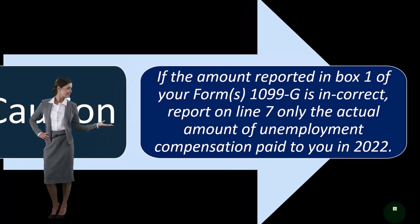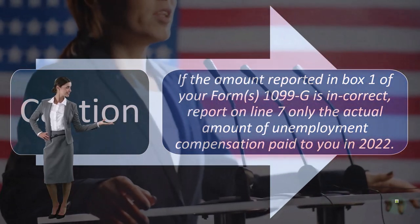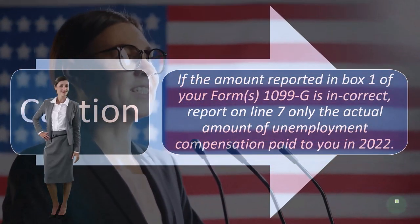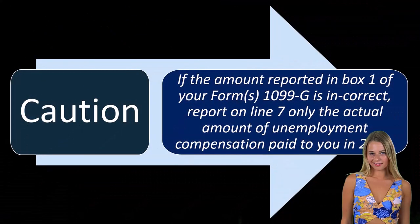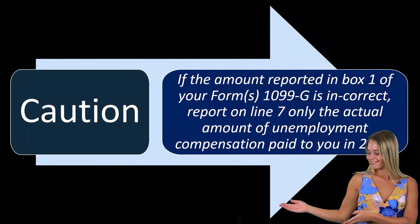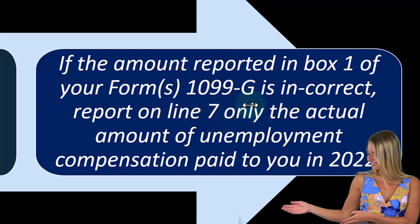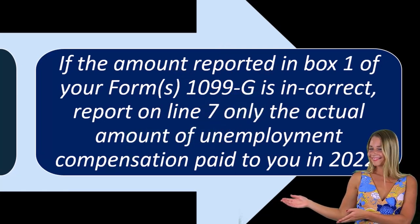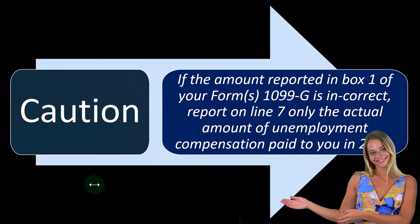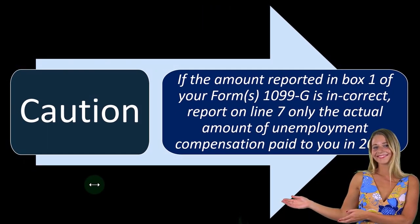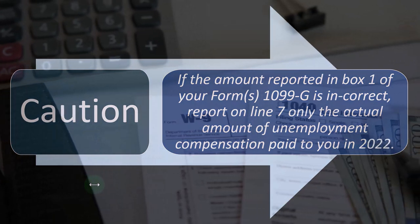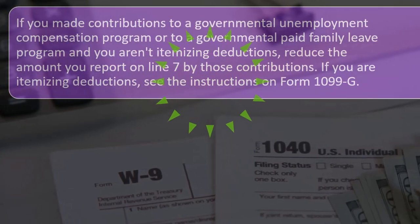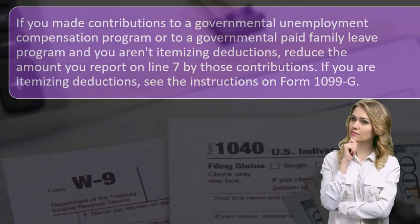For any incorrect 1099-G, go back to the issuer and try to correct the problem — have them issue a corrected 1099 to the IRS. Otherwise the IRS will have a mismatching 1099 on their side versus your return. You don't want to report an incorrect amount, but if your 1099 doesn't match your tax return the IRS will almost certainly question it. The solution is to get the issuer to send the IRS an updated 1099 with the correct information.